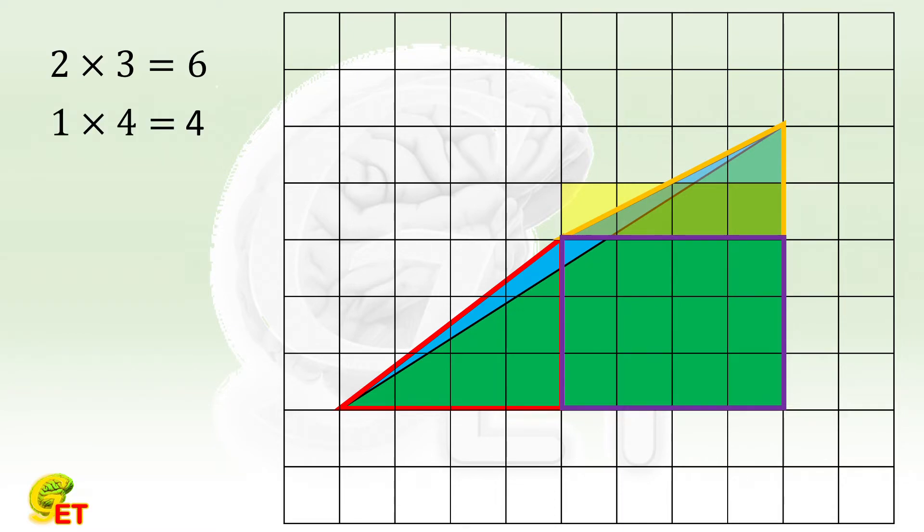Then the easiest one, the rectangle. Its area equals twelve. Therefore, the total area is twenty-two.